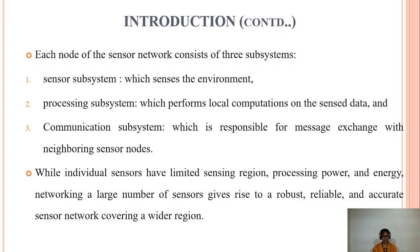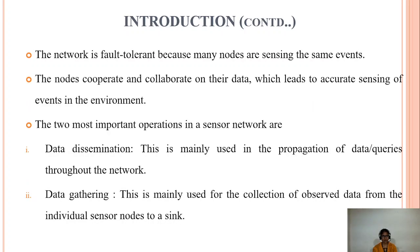While individual sensors have limited sensing region, lack of processing power, and lack of energy, networking a large number of sensors gives rise to a robust, reliable, and accurate sensor network covering a wide region. The network is fault tolerant because many nodes sense the same events, and nodes collaborate with data which leads to sensing of environmental conditions.